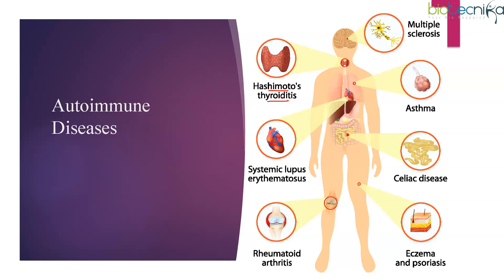The next disease is systemic lupus erythematosus, also known as SLE. It is an inflammatory disease where B cells and T cells attack the host's own tissues, affecting the whole body.